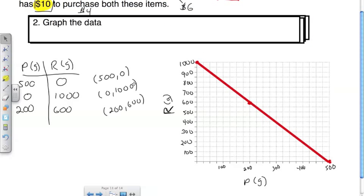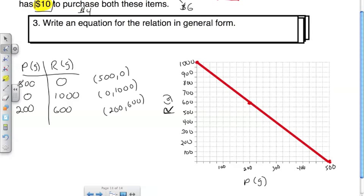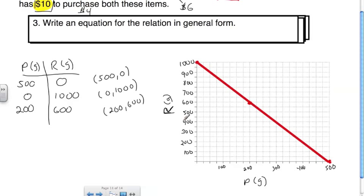We've generated data and graphed it. Now we write an equation in general form. I can't plug into general form directly — I have to use one of the three forms learned in previous lessons first. I'll use slope-intercept form, y equals mx plus b, which most of you are comfortable with. b is the y-intercept and m is the slope.